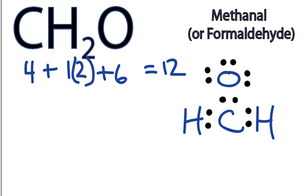We can check now and see if we have octets. Hydrogen only needs 2 valence electrons. So each of those hydrogens, they're okay. Oxygen needs 8. It's fine with 8. Carbon needs 8 as well. It only has 6.